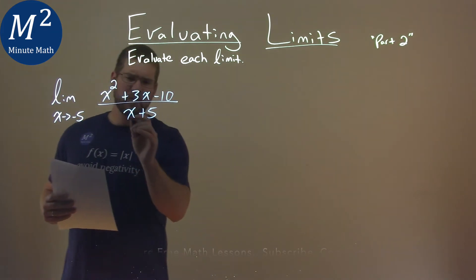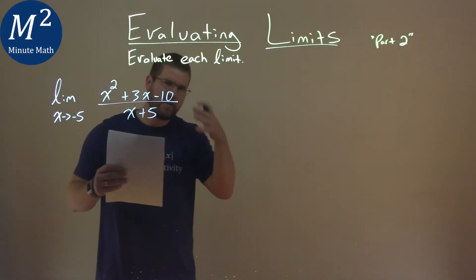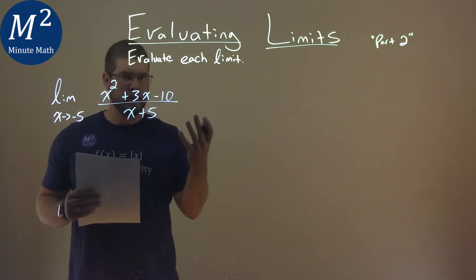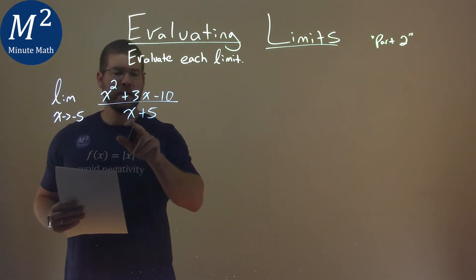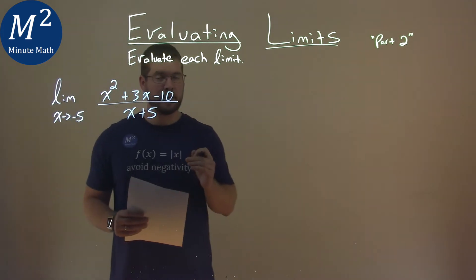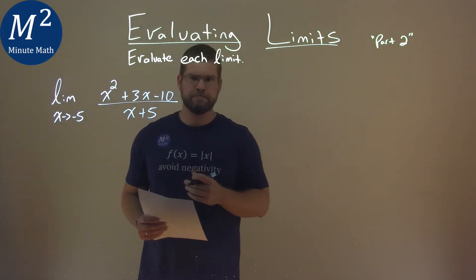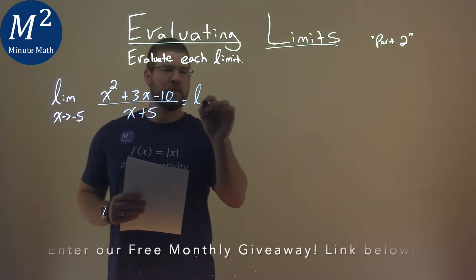Now, one thing I like to do with a rational function is factor the numerator to cancel out something in the denominator. Because as you can see, a negative 5 goes in for x here in the denominator, and we're dividing by 0. So let's try to factor that numerator.